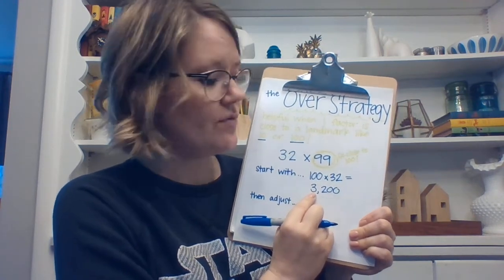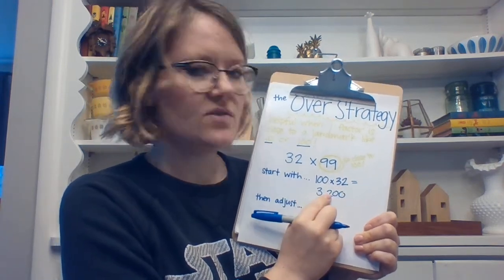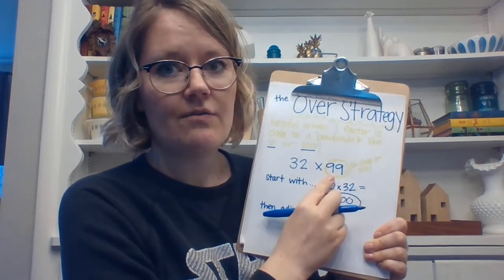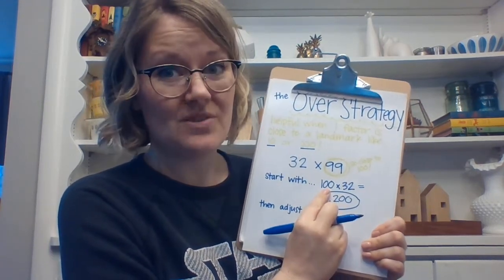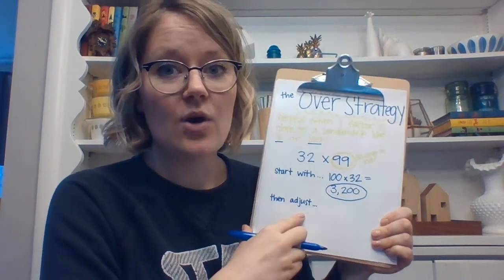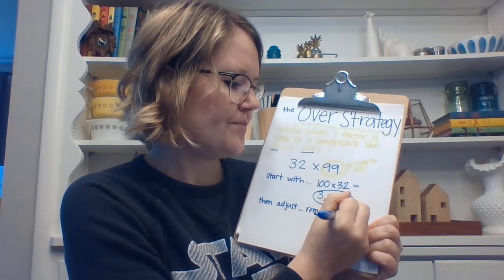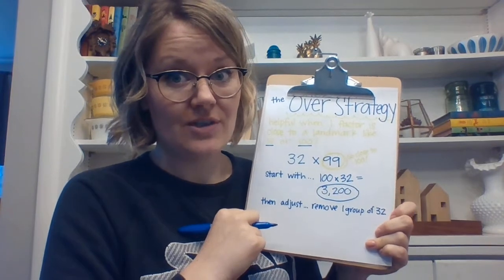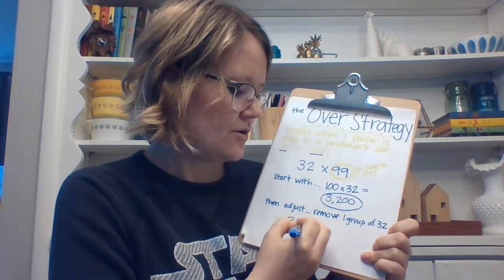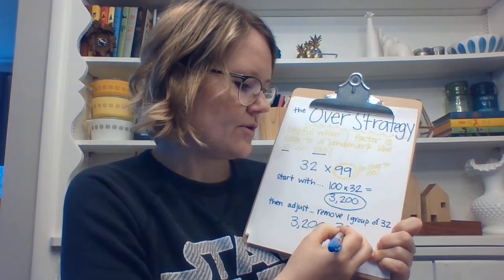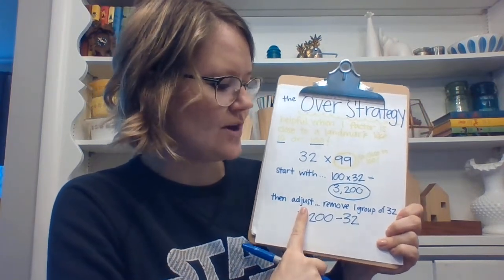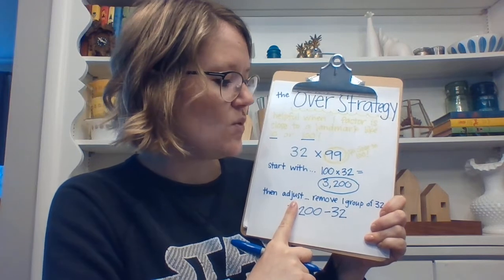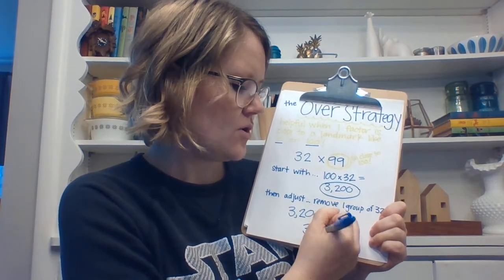The three moved from the tens place to the hundreds place to the thousands place — two places over — and the two that was in the ones place moved two places over to the hundreds place. Now we have 3200, which is really close to the answer for 99 groups of 32. But we did 100 groups of 32, so we need to adjust by removing one group of 32. So I do 3200 minus 32: 200 minus 30 is 170, minus 2 more is 168, giving us a final answer of 3168.